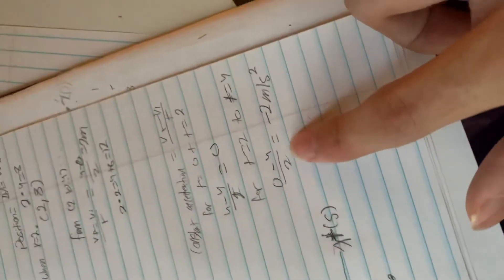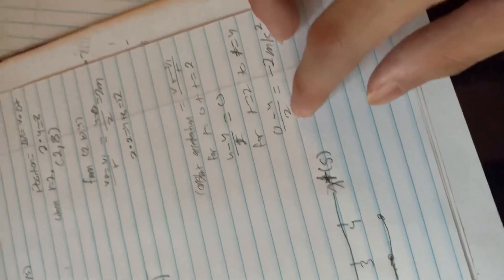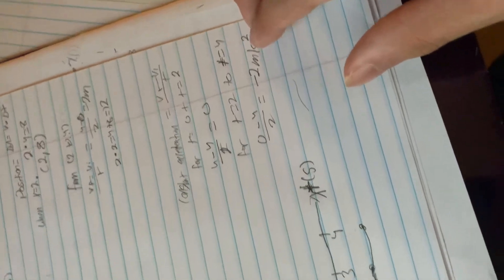So then it would be 0 minus 4 over 2, because that's the interval underneath. And that would give us negative 2 meters per second squared.